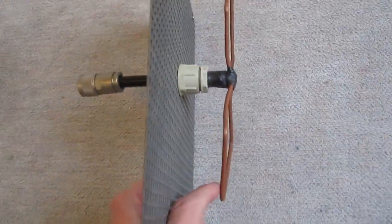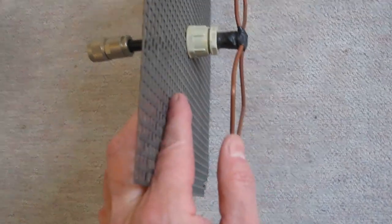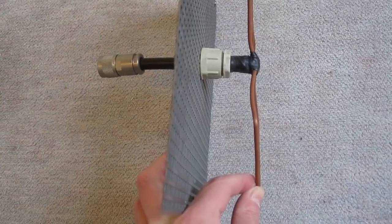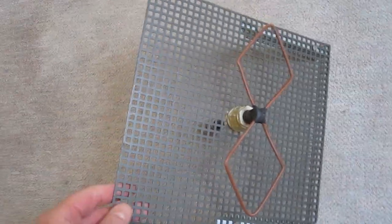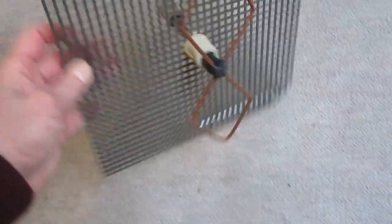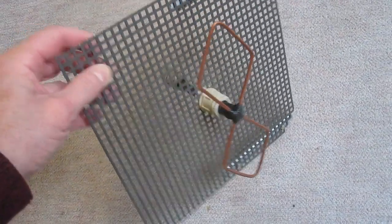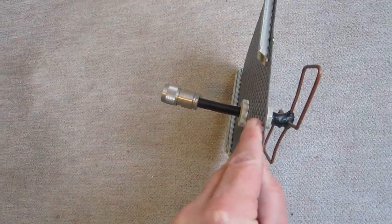By adjusting the distance between the elements and the reflector plate, you also influence the impedance a bit, to match it to 50 ohms or the impedance you desire.